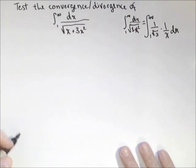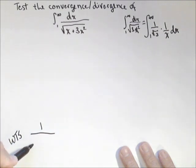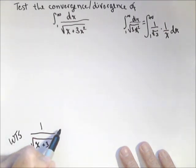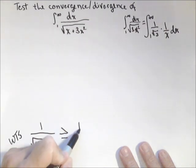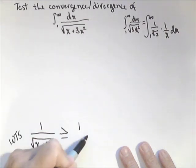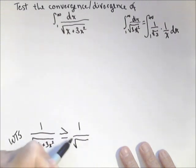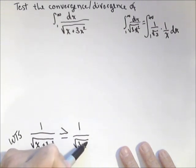So what we want to show—and what I use is WTS for want to show—sometimes it's nice to put the end of our proof and work backwards. We would like to show one over square root of x plus three x squared. Now we're using a divergent improper integral, we can only test for divergence, and we need to show that it's greater than one over square root of three x squared.